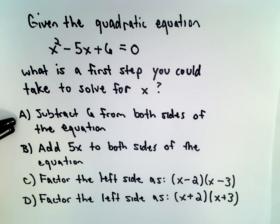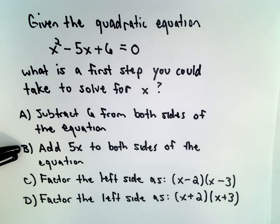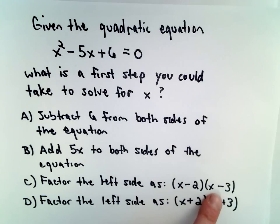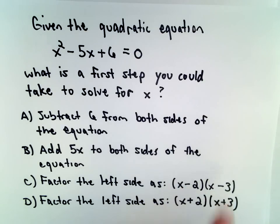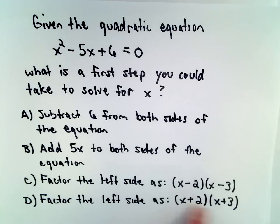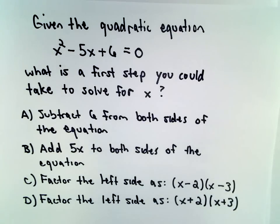Part A says subtract 6 from both sides of the equation. Part B says add 5x to both sides of the equation. Part C says factor the left side as the quantity x minus 2 multiplied by the quantity x minus 3. Part D says factor the left side as the quantity x plus 2 multiplied by the quantity x plus 3.